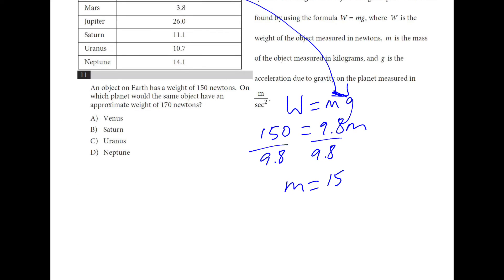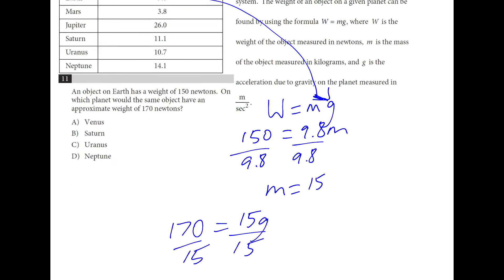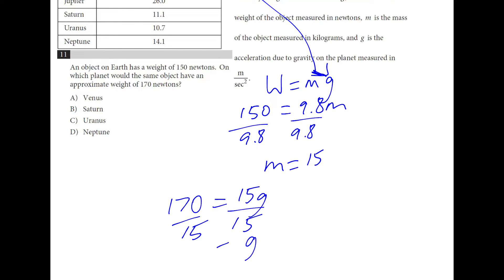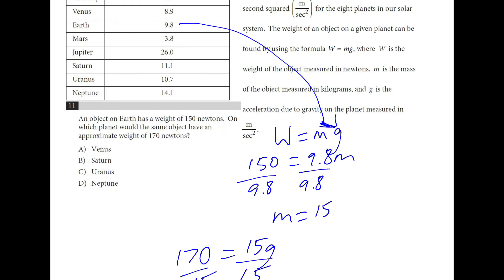The second part of this question says, on which planet would the same object have a weight of 170? So 170 is equal to 15g. And we can plug that back in to find the planet. So if I divide both sides by 15, I get somewhere right around 11. The closest one here is Saturn, B.